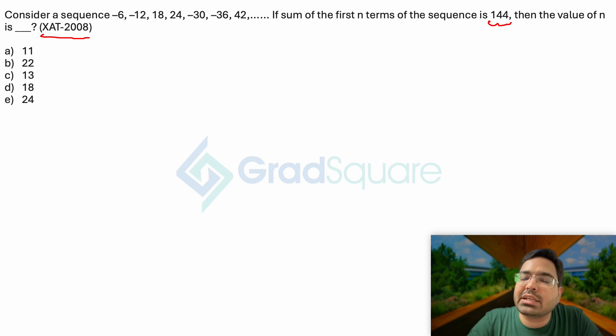It talks about the series of numbers: minus 6, minus 12, 18, 24, minus 30, minus 36, 42, and so on. Whenever you get questions based on series and sequence, I would want you to write a few terms on your own so that it tells you what pattern the question is following.